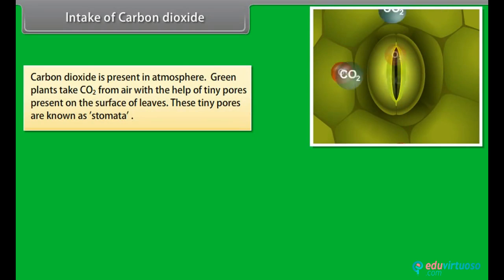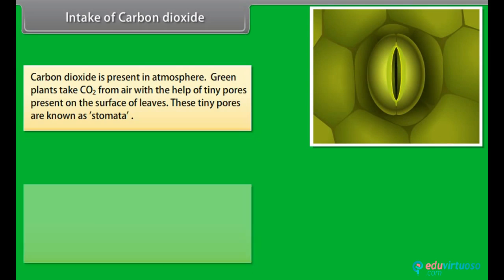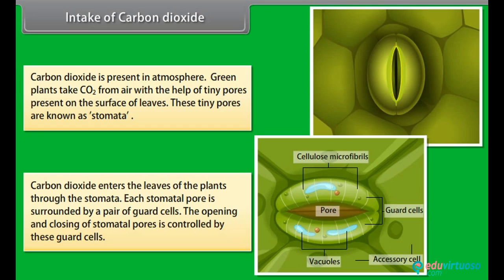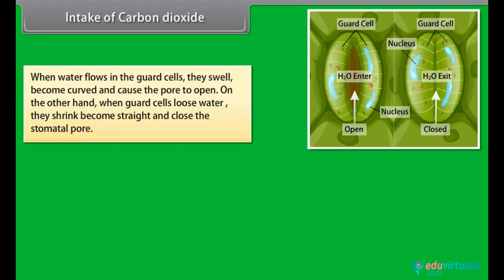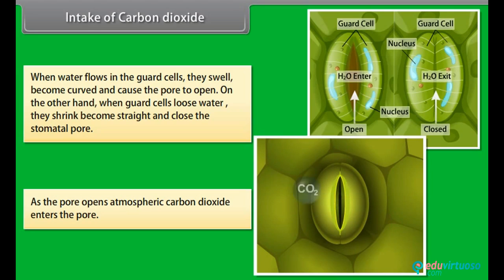Carbon dioxide is present in the atmosphere. Green plants take CO2 from air through tiny pores on the surface of leaves called stomata. Carbon dioxide enters the leaves through the stomata. Each stomatal pore is surrounded by a pair of guard cells, which control the opening and closing of the pores. When water flows into the guard cells, they swell, become curved, and cause the pore to open. When guard cells lose water, they shrink, become straight, and close the stomatal pore. As the pore opens, atmospheric carbon dioxide enters.